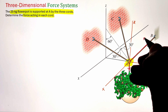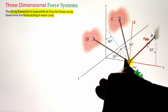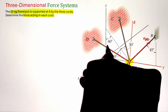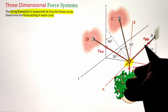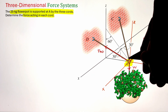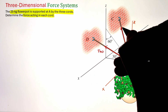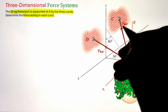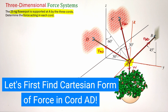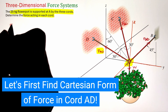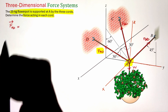Next, we list down all the forces developed in each cord. Since we already know the weight of the flower pot acting vertically downward, we can define it as a variable W, calculated by multiplying 25 kg with 9.81. The force developed in the rope from A to B can be given as F_AB. Similarly, the forces developed from A to D and A to C can be listed as F_AD and F_AC.